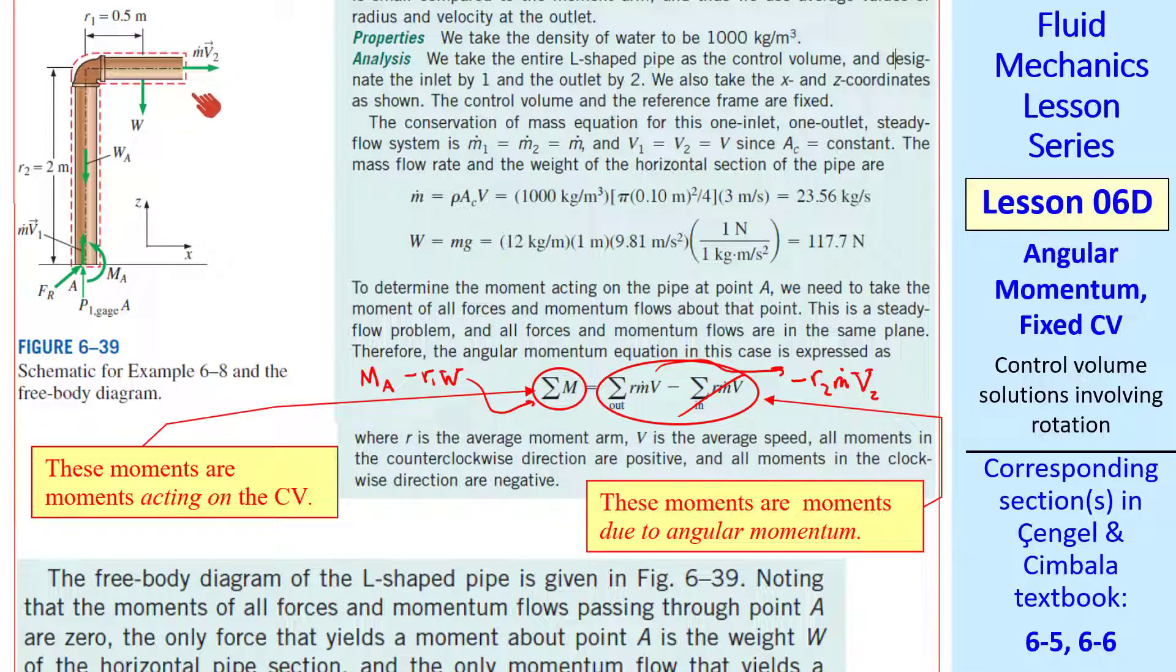Again, this is the most difficult part of the problem, getting the signs correct. We know intuitively that this jet is going to cause a counterclockwise moment on this pipe about point A. But the actual angular momentum flow rate out of the control volume is in the clockwise direction, which means we need a negative sign in our equation, which deals with counterclockwise moments as positive.